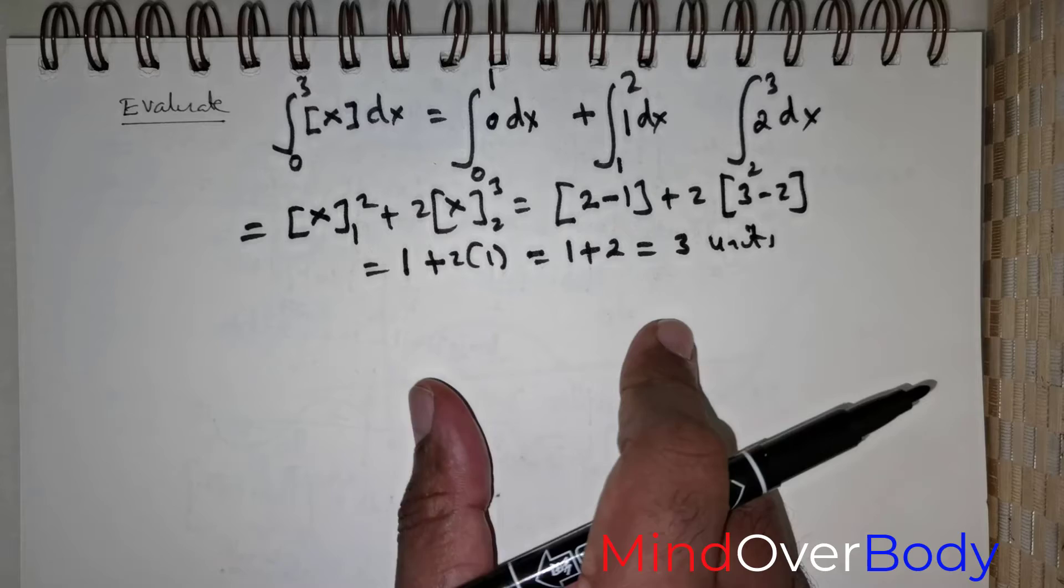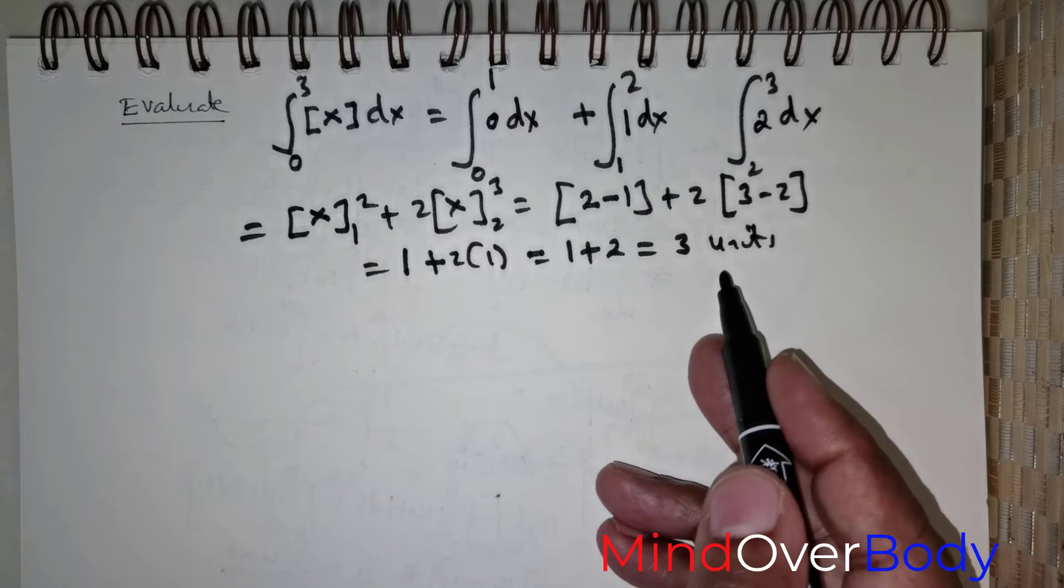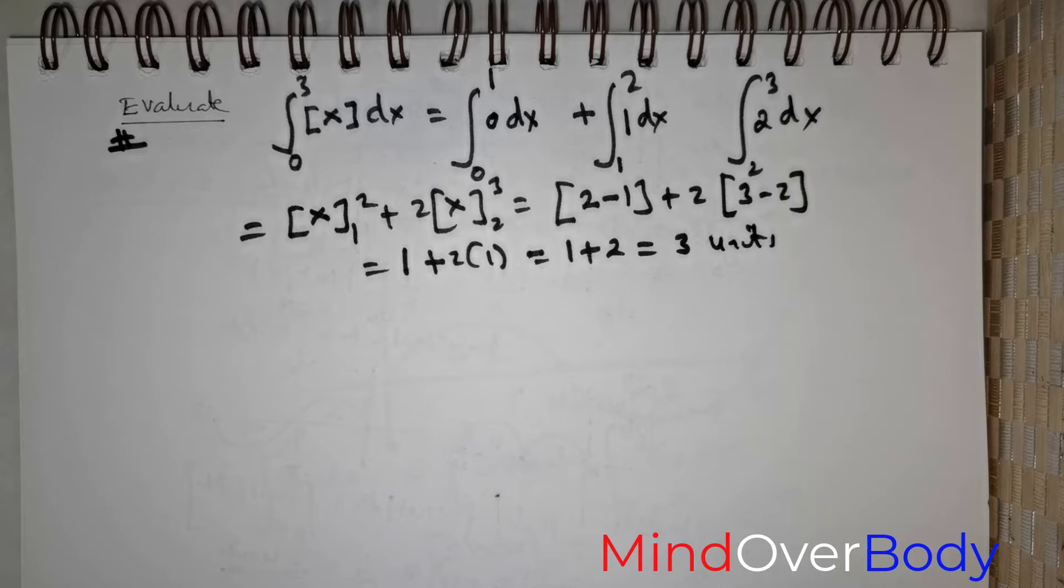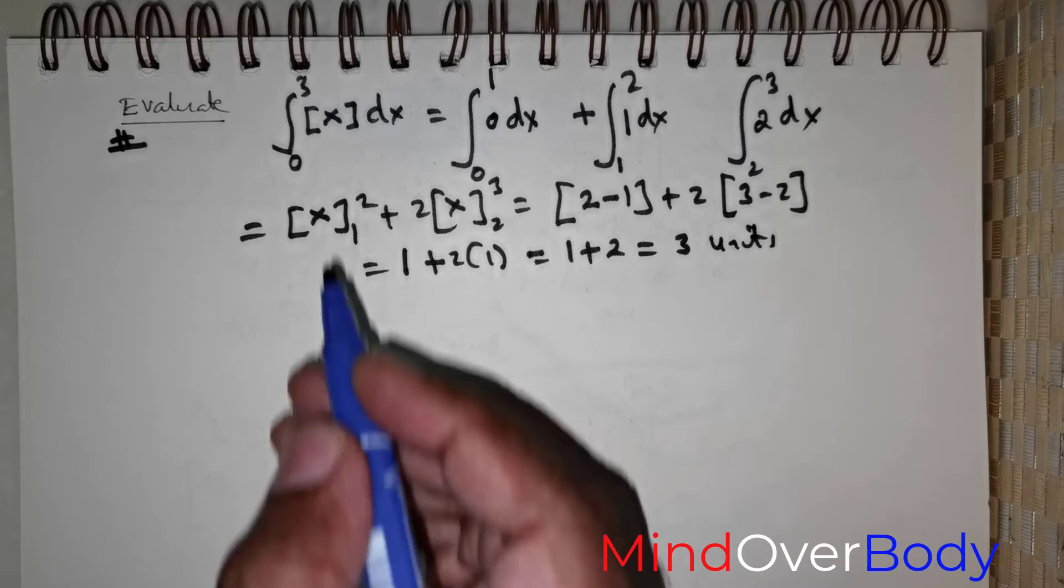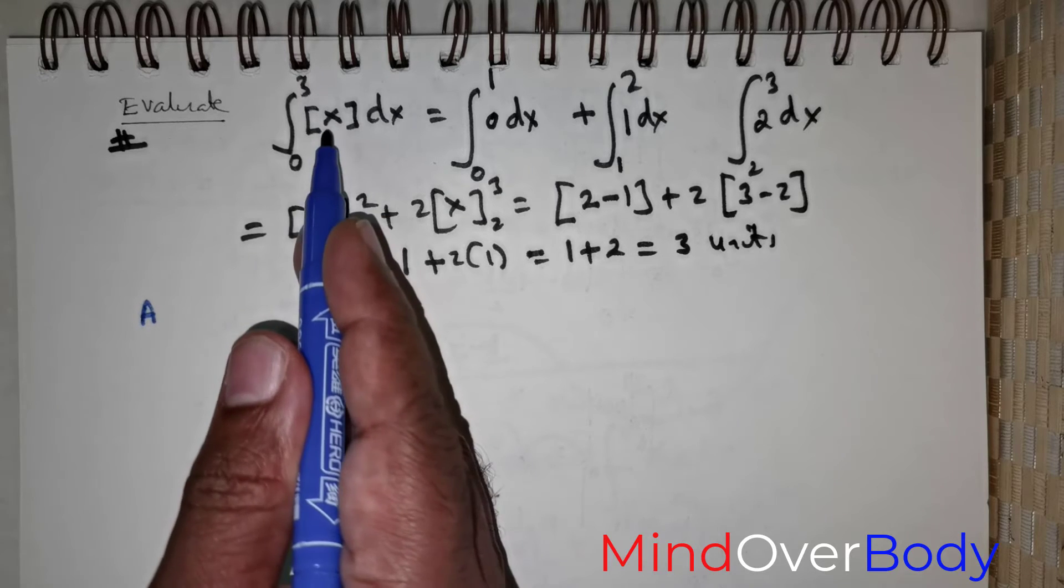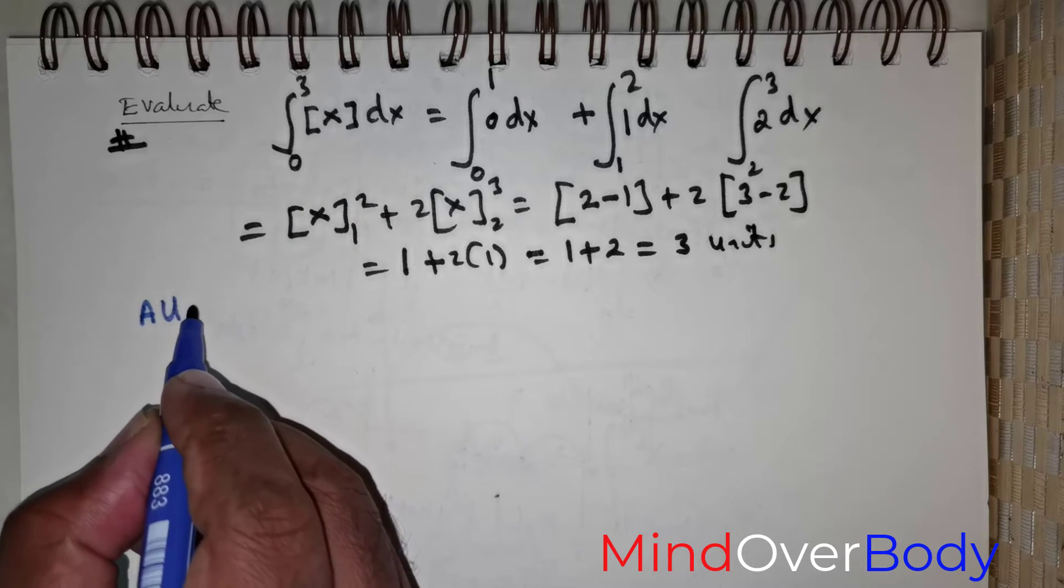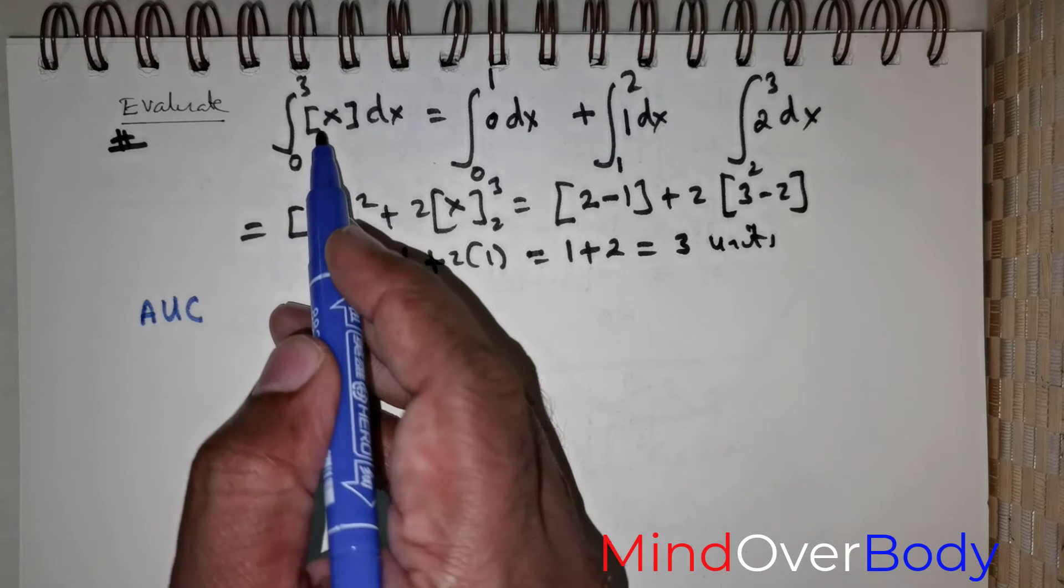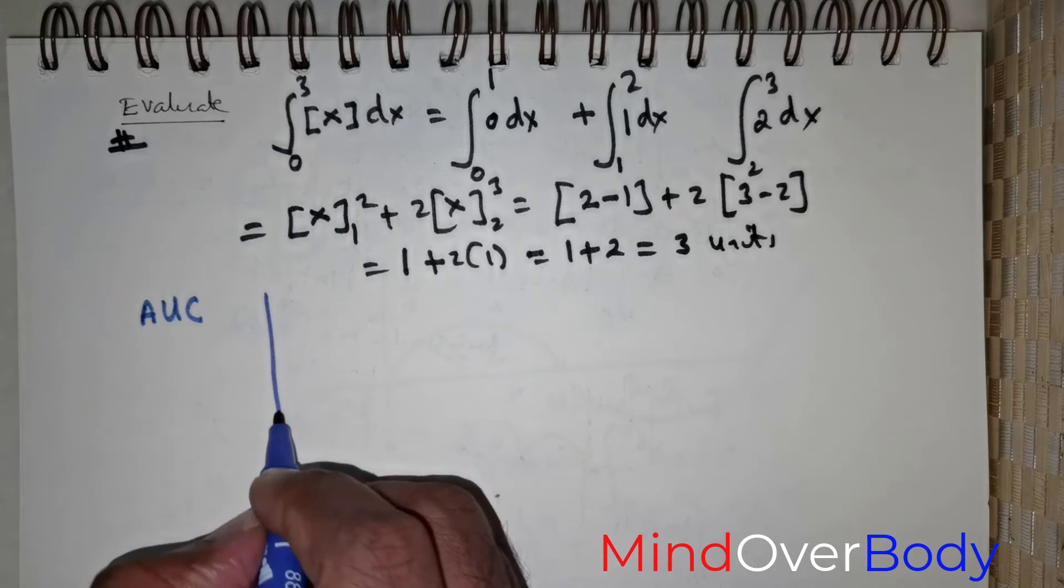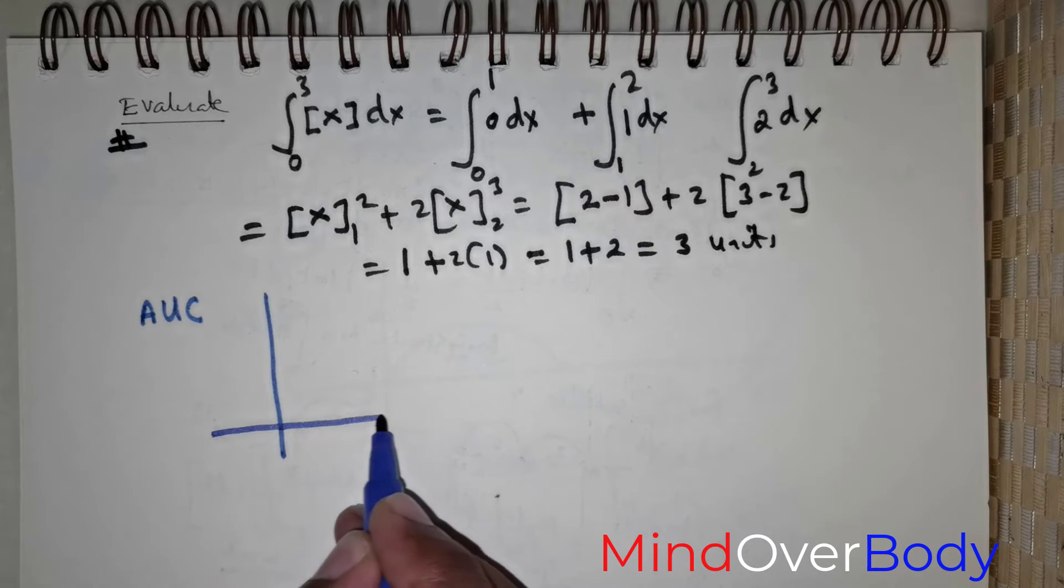So, this is the solution. You don't have to write it as units. You can simply write it as 3 for this particular question. So, let's move on to the next question. Now, if in case they are asking us to find the area enclosed by the greatest integer function or area under the curve of f of x being equal to the greatest integer function of x, then we can also apply graphical technique.